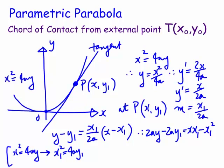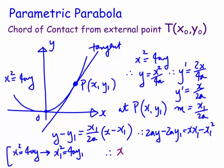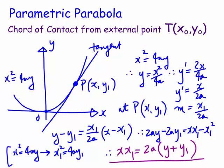We move the 4ay1 across and get xx1 equal to 2ay plus 2ay1. Factoring out 2a, this is now the Cartesian equation of the tangent: xx1 equals 2a times (y plus y1).